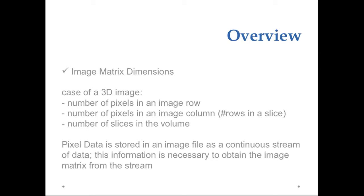The image matrix dimension is the other information necessary because the pixel data are stored in an image file as a continuous stream of data, so this information is necessary to obtain the image matrix from the stream.